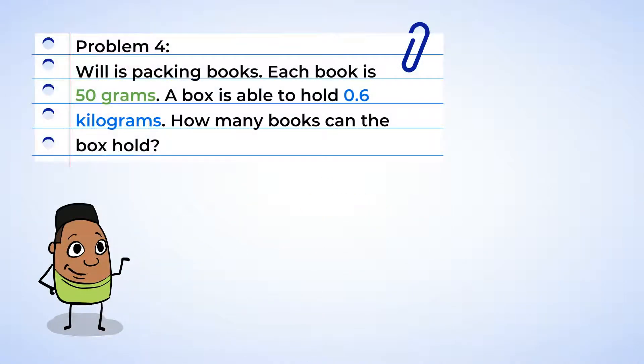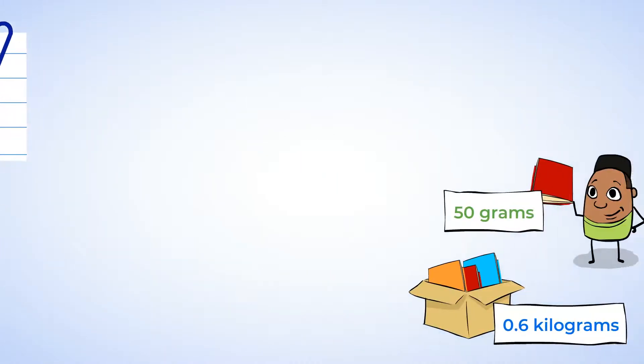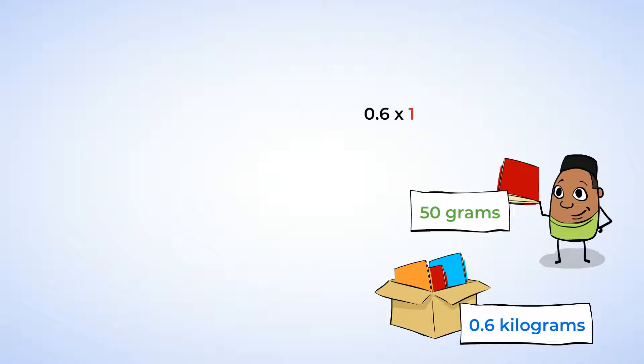Now, in this problem, Will is packing books. We know that each book is 50 grams. And these books go into boxes. A box is able to hold 0.6 kilograms. How many books can the box hold? Well, first, we need to convert 0.6 kilograms to grams. And to do this, we're going to need to multiply by 1,000. This is the same as moving the decimal point over to the right three places. 0.6 kilograms is equal to 600 grams.